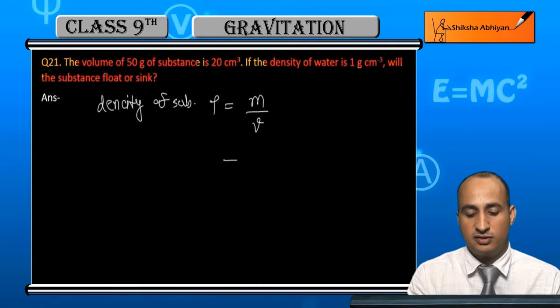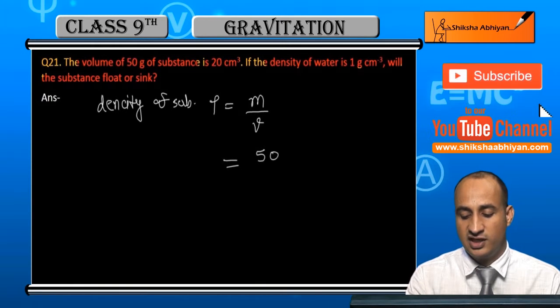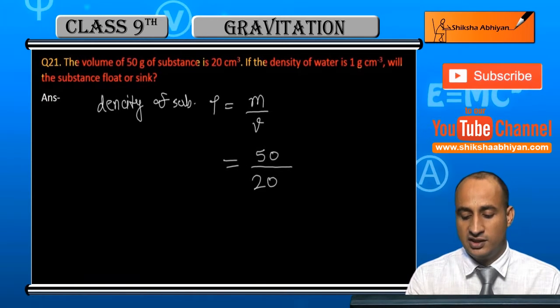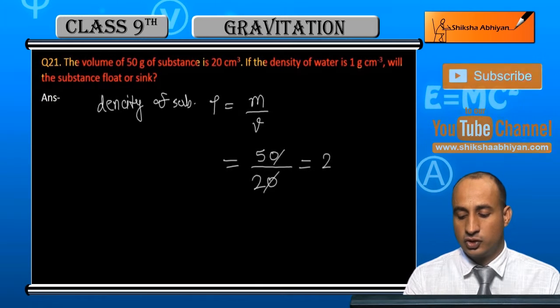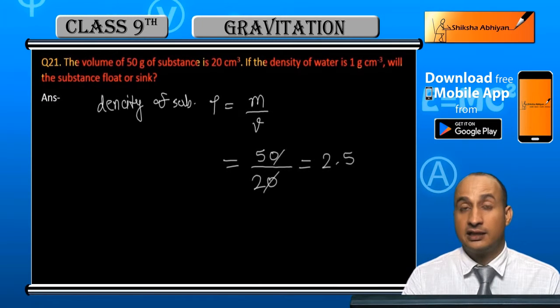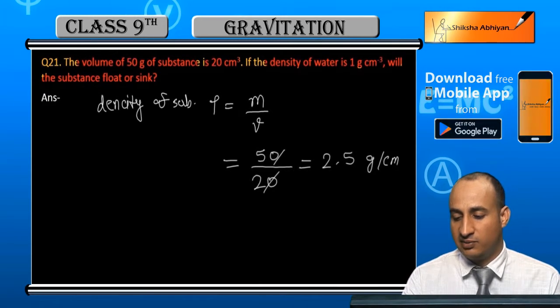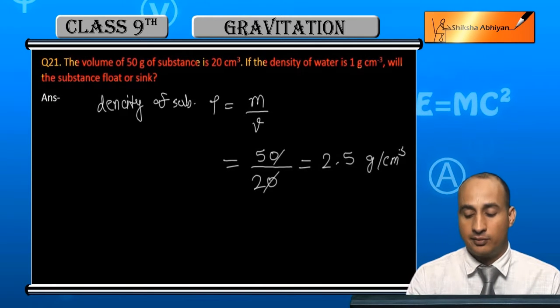Here the mass of the substance is 50 gram and volume is 20. So this will be 5 by 2, which is 2.5 gram per centimeter cube.